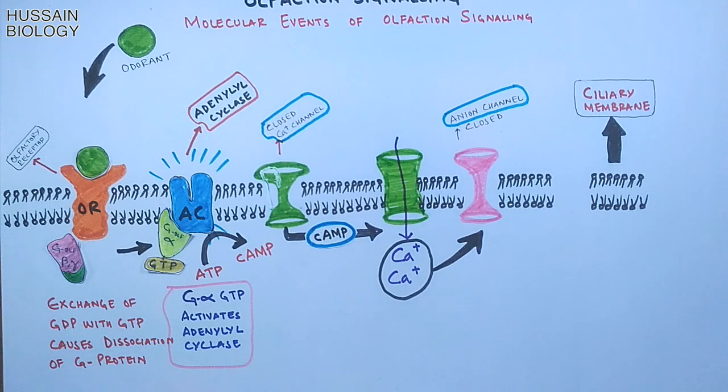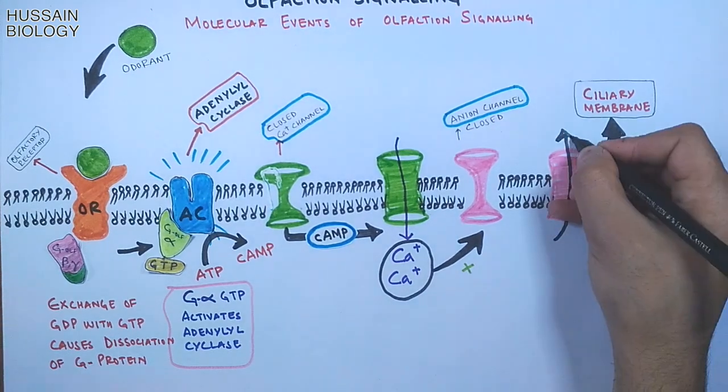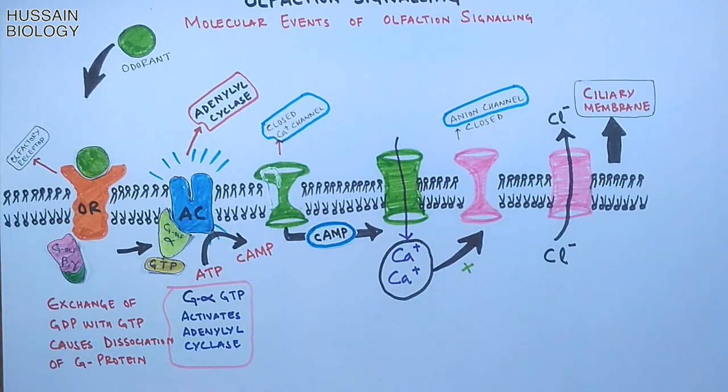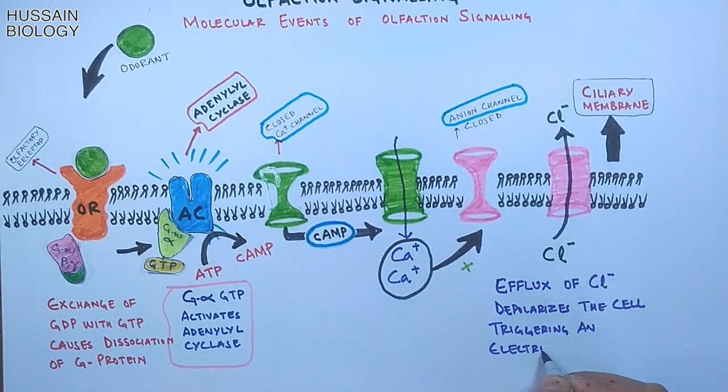The calcium acts on calcium-gated chloride channels and opens them. This causes efflux of chloride ions which then depolarizes the cell, triggering an electrical signal to the brain.